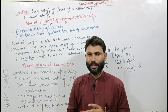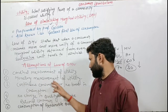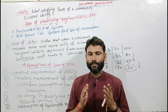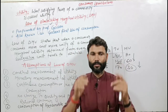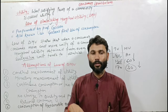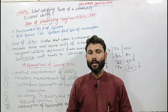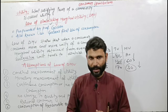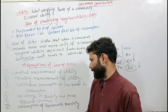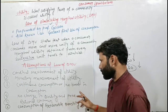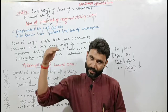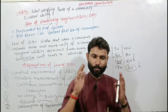Second assumption: monetary measurement of utility. This means that the satisfaction obtained from consuming a commodity can also be measured in money terms — for example, 100 rupees worth of satisfaction, or 500 rupees worth of satisfaction. We assume this is possible. Third assumption: continuous consumption — there should be no break in consumption.